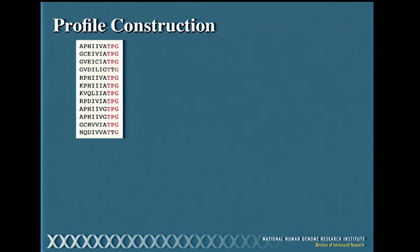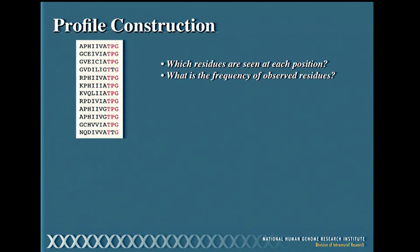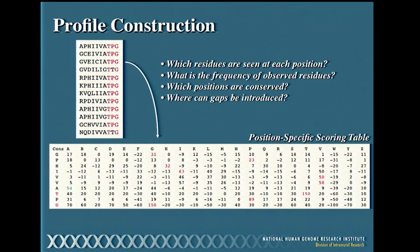What does one of these profiles look like? Here I have a multiple sequence alignment, 10 positions across. At position eight, you always see a threonine. At position nine, you sometimes see a proline and sometimes a threonine. In the last position, you always see an invariant glycine. Based on that multiple sequence alignment, we ask four questions: what residues do we see at each position, what's the frequency of observed positions where we don't have absolute conservation, which places are conserved, and where can gaps be introduced?